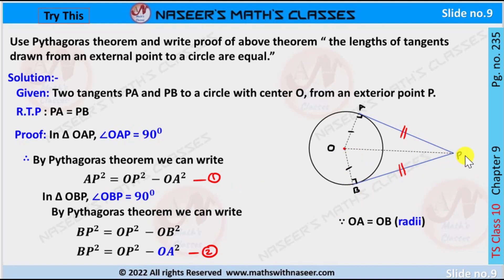Then OP is the hypotenuse. By Pythagoras theorem we can write BP² = OP² - OB². Here, OA and OB are equal because these are the radii of the circle. Then we replace OB with OA.